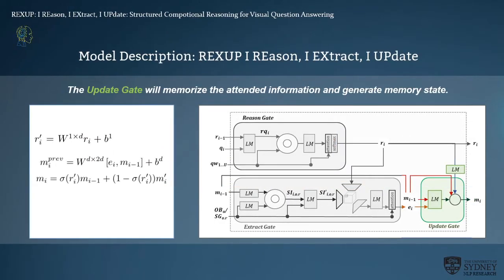Finally, the update gate memorizes the attended information and generates a memory state. To reduce redundant reasoning steps for short textual questions, we apply the sigmoid function on the previous memory state and the region state. We have two branches — image object oriented and scene graph oriented — and the final memory states of both branches are concatenated together as an ultimate memory state for VQA prediction.